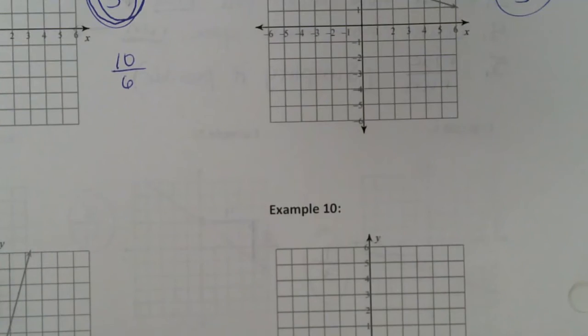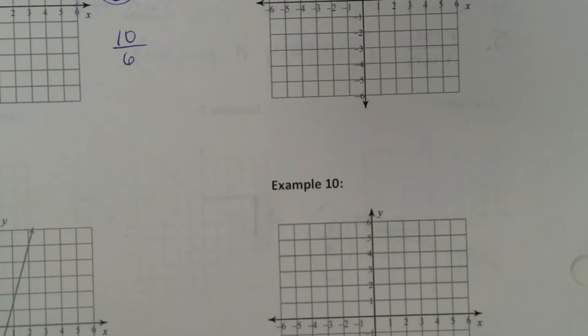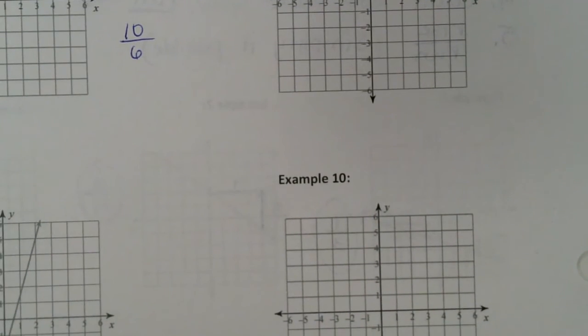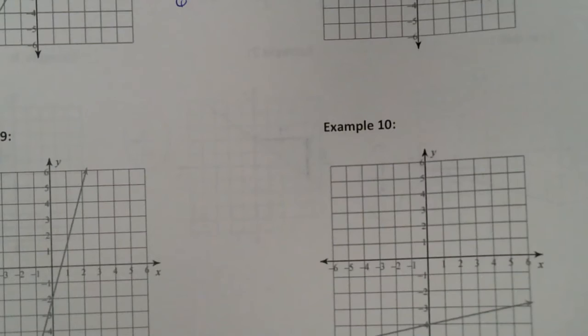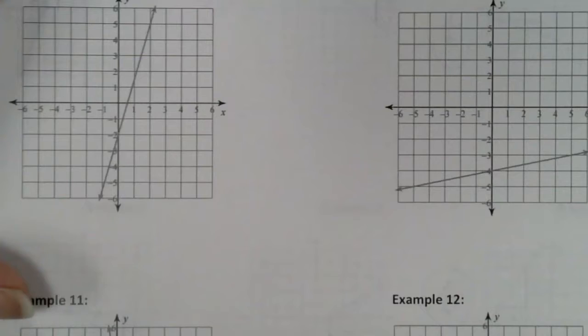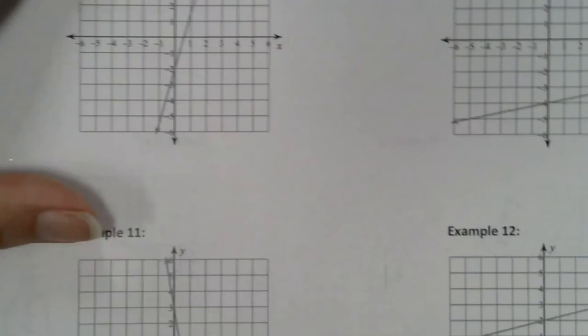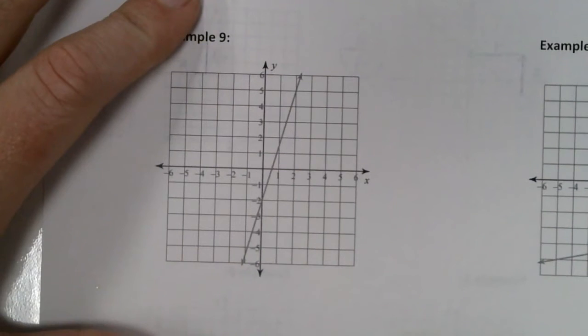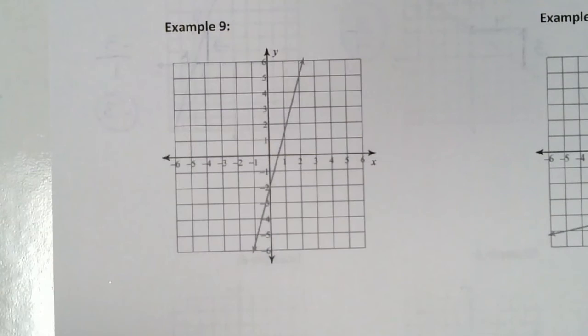All right, do you want to try the other four by yourself? The only difference between this and the front is now you've got to pick two points. Make sure you pick good ones, and make sure you reduce.